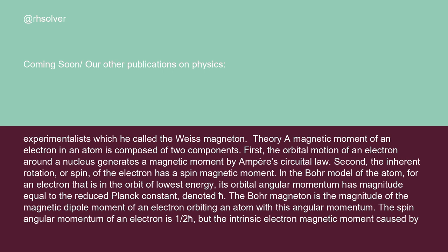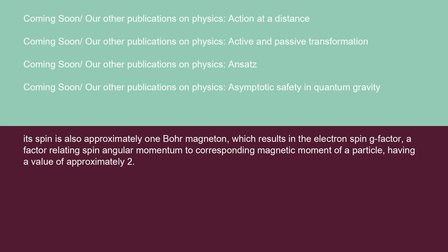The spin angular momentum of an electron is one-half h, but the intrinsic electron magnetic moment caused by its spin is also approximately one Bohr magneton, which results in the electron spin g-factor — a factor relating spin angular momentum to the corresponding magnetic moment of a particle — having a value of approximately two.